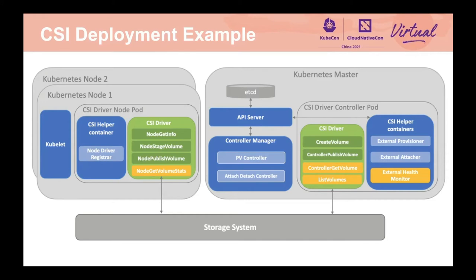The external health monitor controller works differently from other sidecars. It periodically calls the CSI driver to retrieve volume health information from online storage systems. On Kubernetes worker nodes, we have Kubelet and the CSI driver node plugin deployed together with the node driver registrar sidecar container. The node driver registrar fetches driver information using NodeGetInfo from the CSI endpoint and registers the CSI driver with the Kubelet node. Kubelet directly issues CSI NodeGetInfo, NodeStageVolume, and NodePublishVolume calls against CSI drivers to get info and mount volumes. Kubelet also periodically calls NodeGetVolumeStats to get volume stats information, including volume health information.